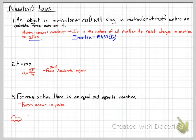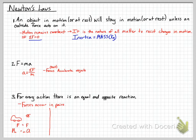If we have a car and it's going to hit a bug, there is an equal and opposite force on each object — they occur in pairs. The force that the car applies to the bug and the force the bug applies to the car are equal. The difference is that the car has a very large mass, so it has a very small acceleration — F equals large M times little a. The bug has a very small mass, so it has a very large acceleration.